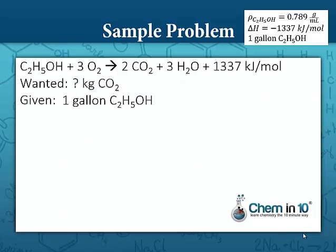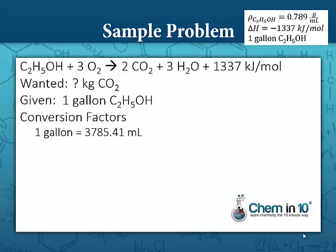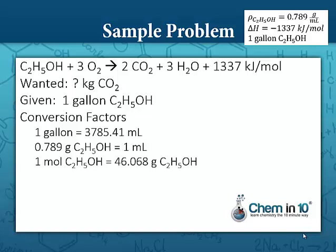We also need to find how many kilograms of carbon dioxide would be produced. We set the whole problem up again, this time solving for kilograms of carbon dioxide. We still need to go from gallons to milliliters, then milliliters to grams using the density of ethanol, then grams of ethanol to moles of ethanol using the molar mass. And once we have moles of ethanol, we determine moles of carbon dioxide: from our balanced equation, one mole of ethanol produces two moles of carbon dioxide.